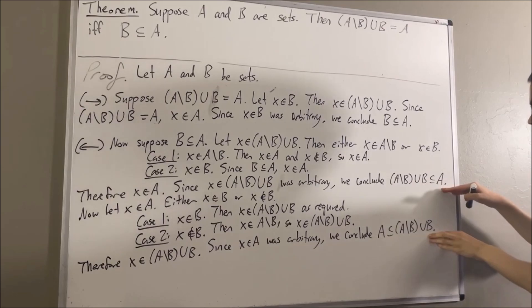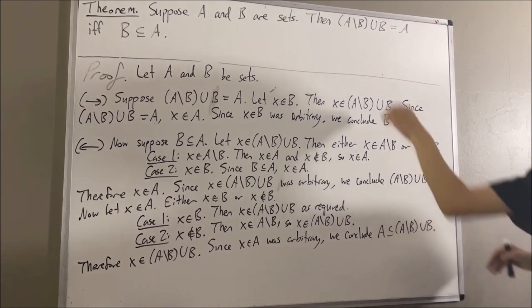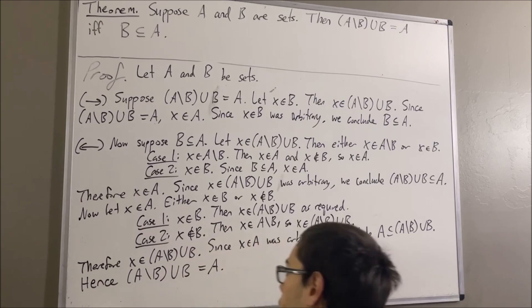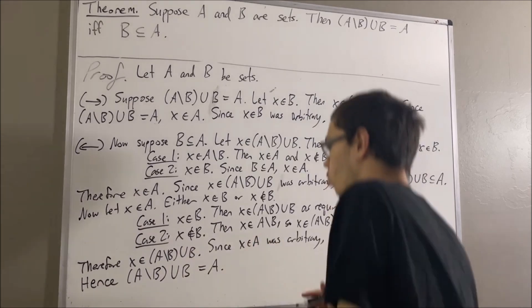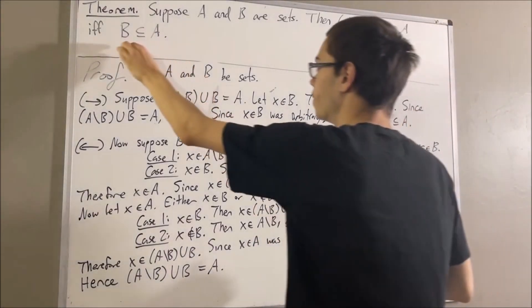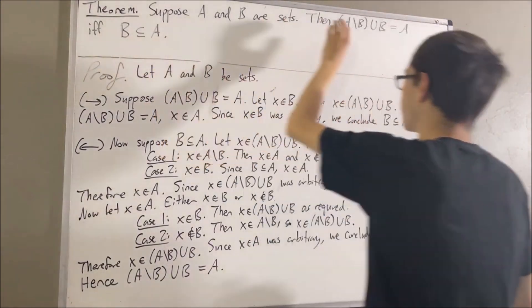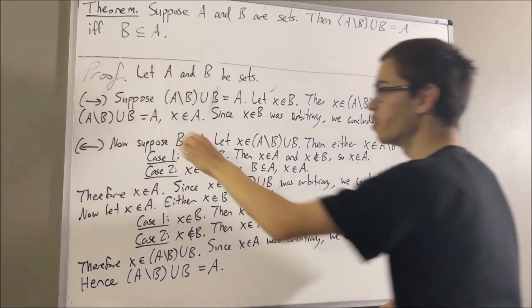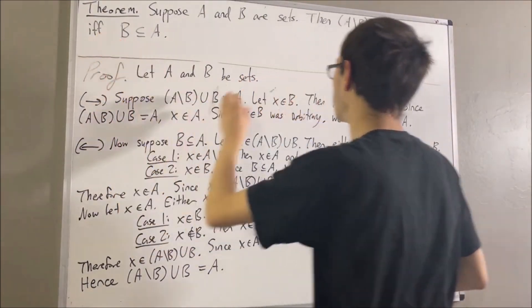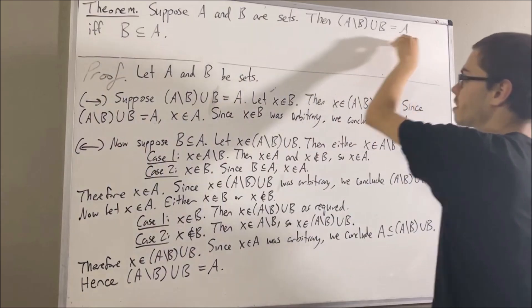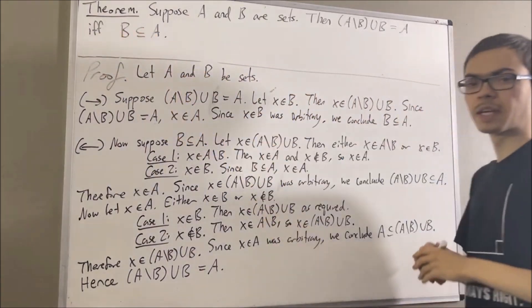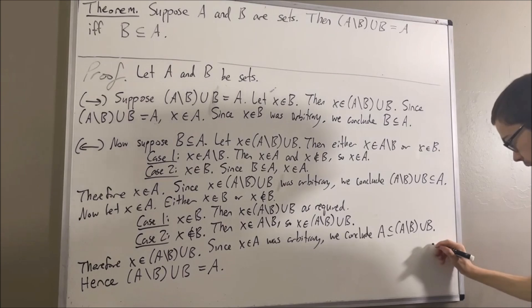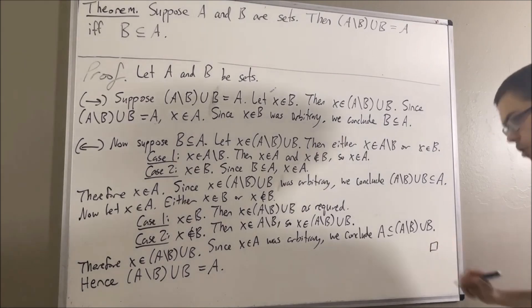So these two containment facts together tell us that the two sets are equal. What we've proven here is the backward direction: if B is a subset of A, then the union equals A. We have now proven both directions of the if and only if, so we have proven the entire statement. And that's exactly what we wanted to prove — this completes the proof.